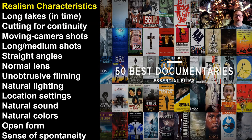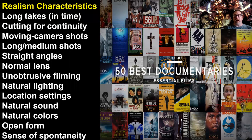Our realism characteristics: we're going to have long takes, not a lot of moving camera, and cutting to continuity — meaning we're only going to cut to shorten down the time without altering the story. For example, in a documentary about an individual struggling in a coal mine, we don't need to see the person sleep for six hours. We'll see teeth brushing, lying down, then go to him waking up in the morning. We're going to cut out unnecessary details that don't involve or change the plot. That's cutting to continuity.